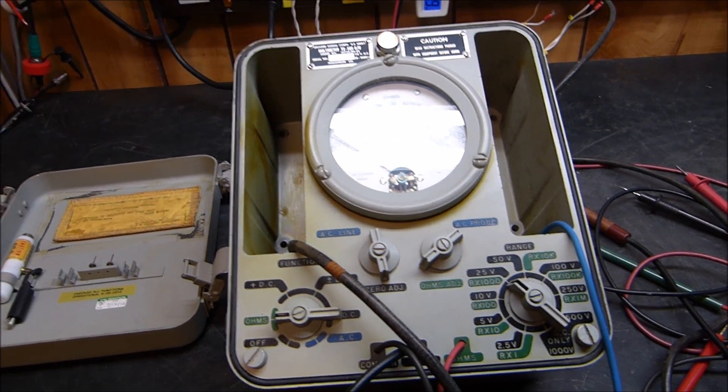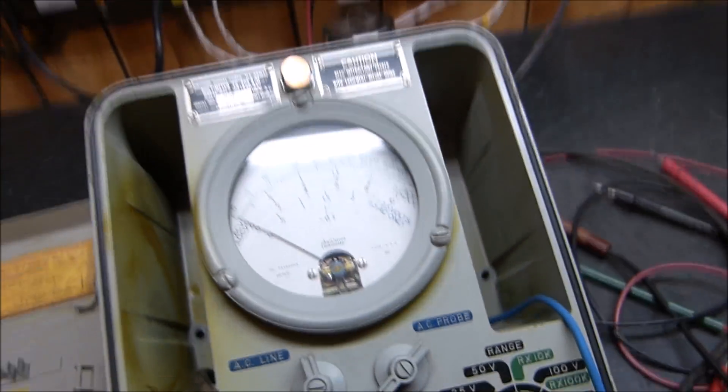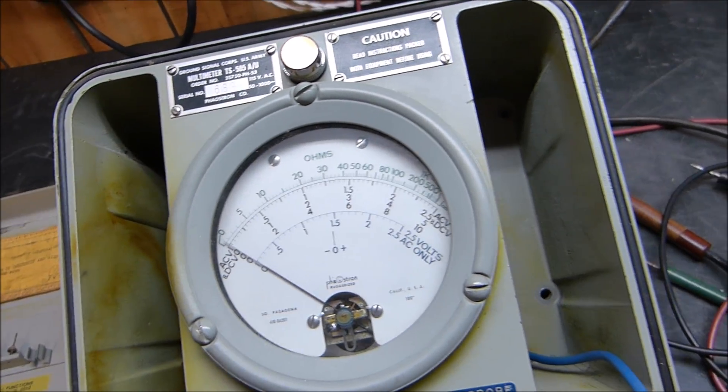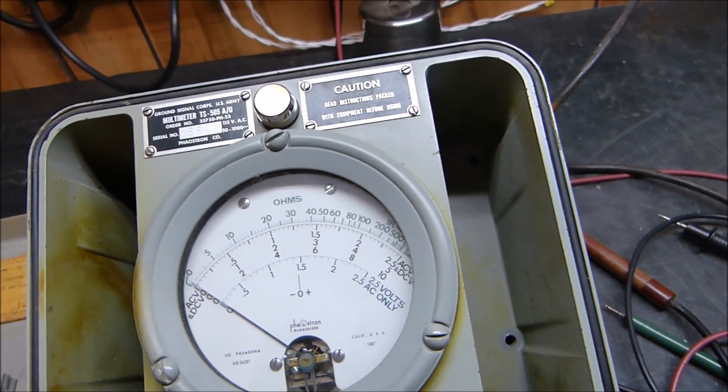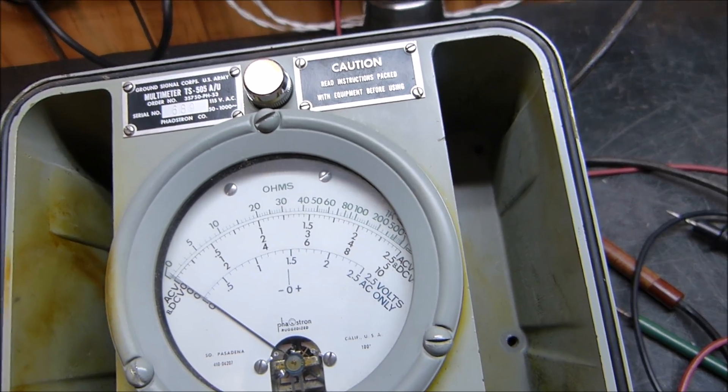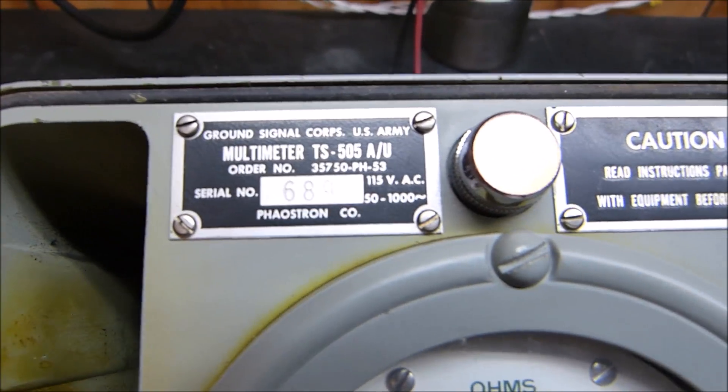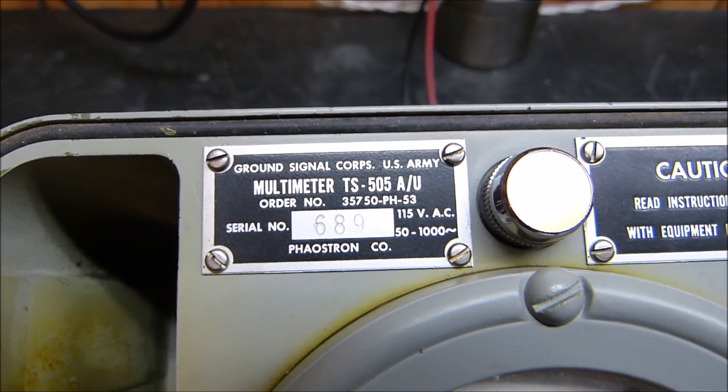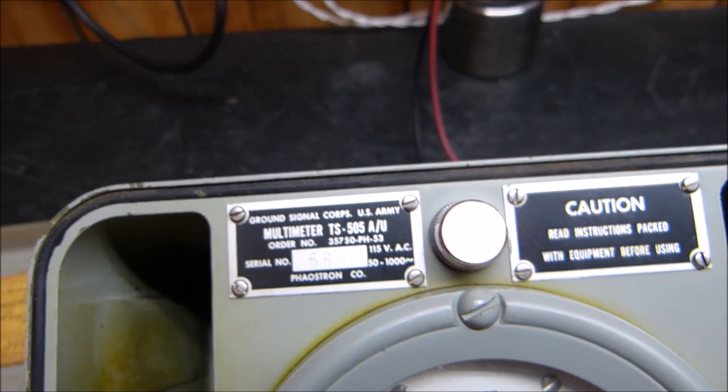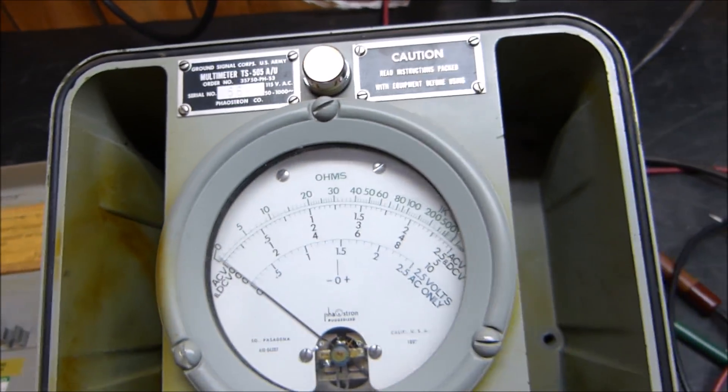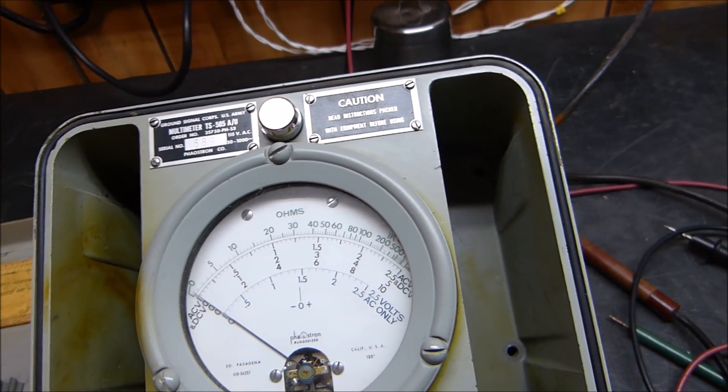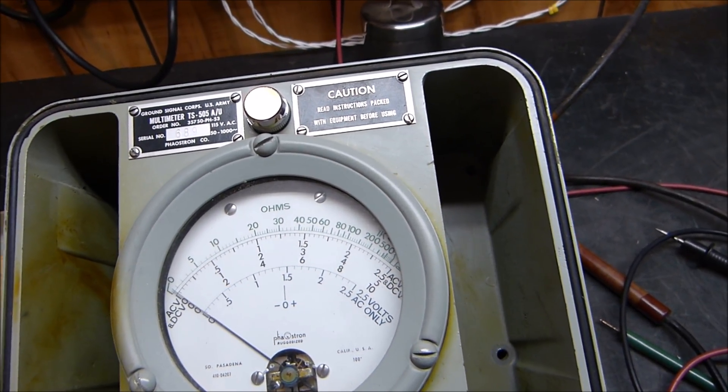Tonight is October 7th, 2017, and I'm going to document a repair of this old meter that I've had for a long time. It's called a multimeter TS-505 AU, a vacuum tube voltmeter made from the late 50s, early 60s.